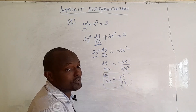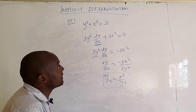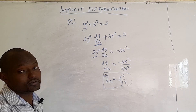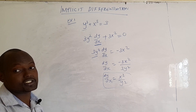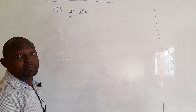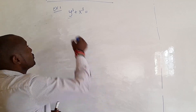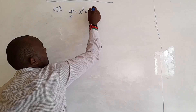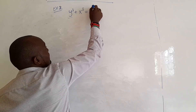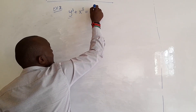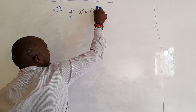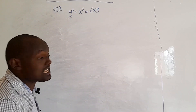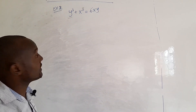And that is how we solve implicit differentiation. Let us take Example 2 for more clarification. In Example 2 I want to solve a similar equation but this time it includes the term 6xy on the right-hand side.